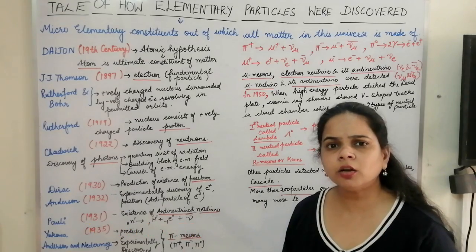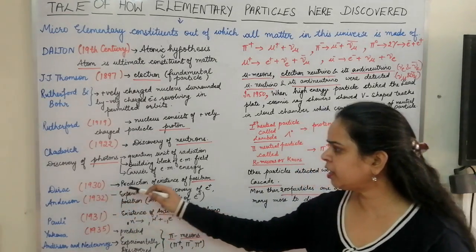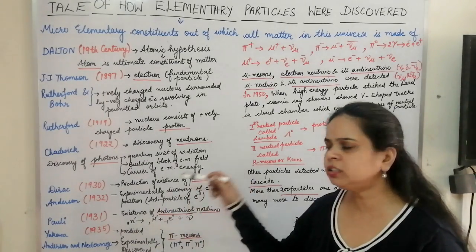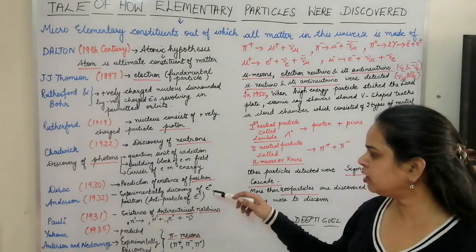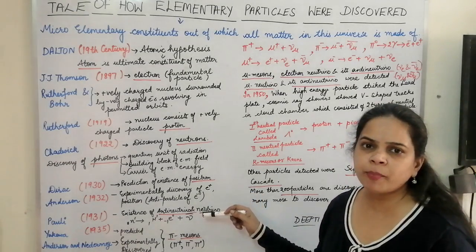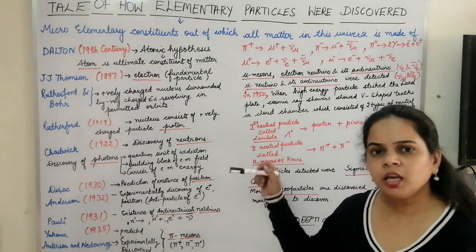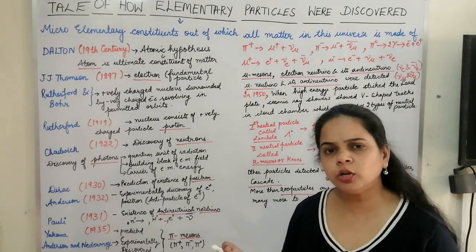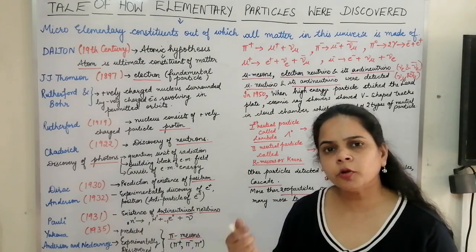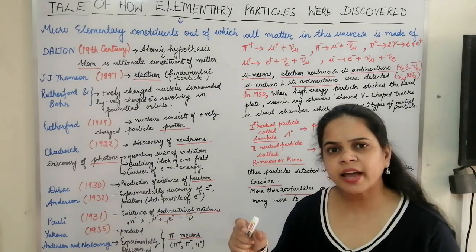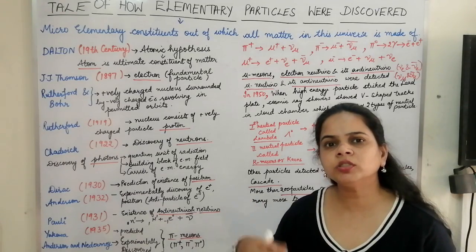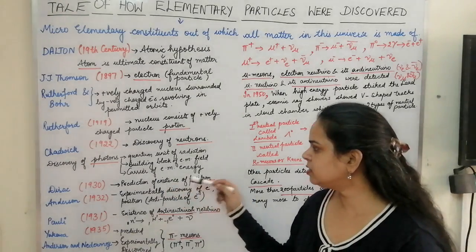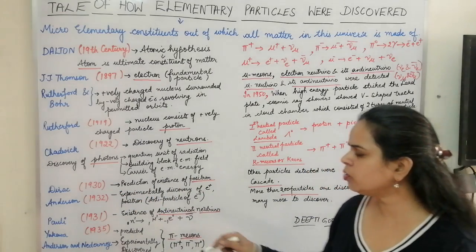No one had thought that any other particles existed, but Dirac in 1930 predicted the existence of positrons, and in 1932 Anderson experimentally discovered the positron. The positron was regarded as the antiparticle of the electron. When an electron is removed from a particular atom, a vacancy is created inside the atom — that vacancy was regarded as a hole and given the name positron.